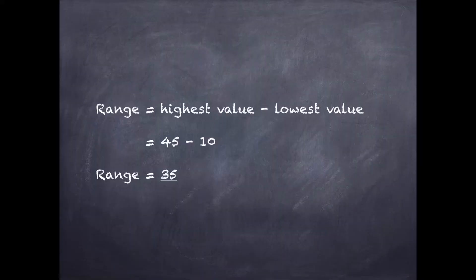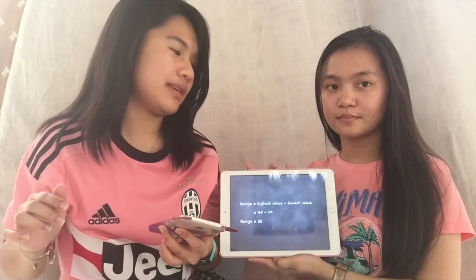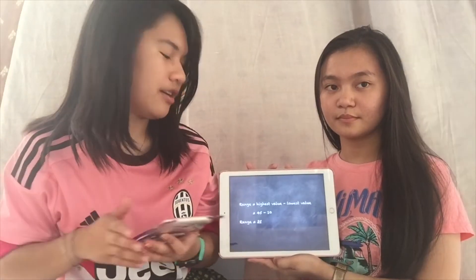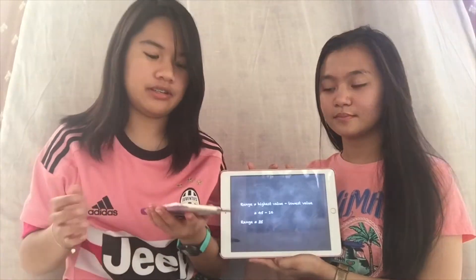Range is the area of variation between upper and lower limits on a particular scale. The formula for range is highest value minus lowest value, which is 45 minus 10, and it will be equal to 35.